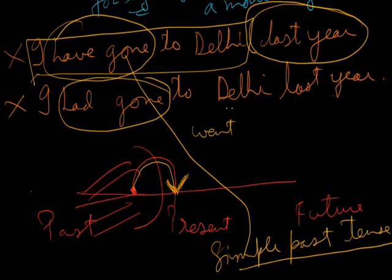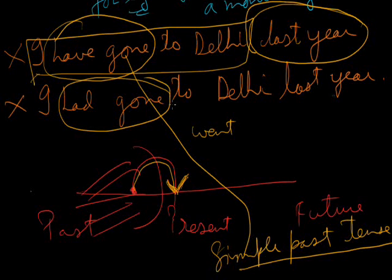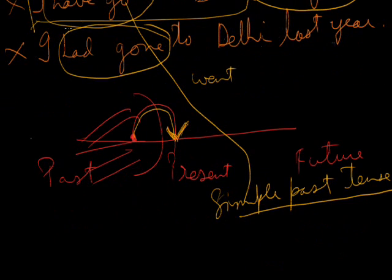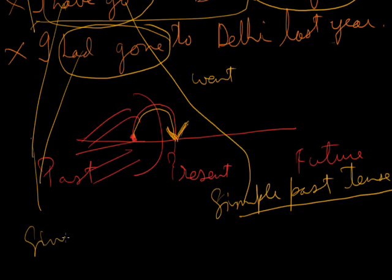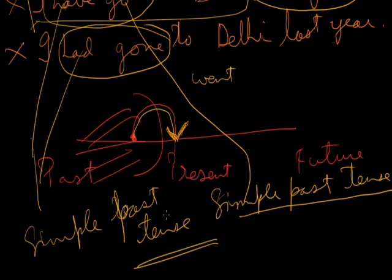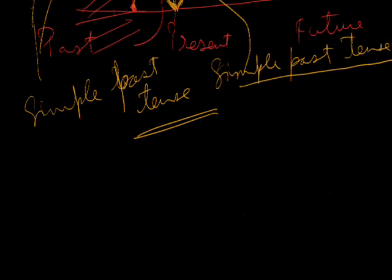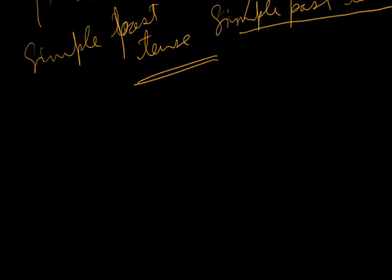Similarly, 'I had gone to Delhi last year' is also incorrect. As explained in the first point, past perfect tense is always used when we compare two actions in the past and decide which action happened earlier. So in both cases, we must use simple past tense to make the sentence correct and meaningful. I hope this point is clear to all.